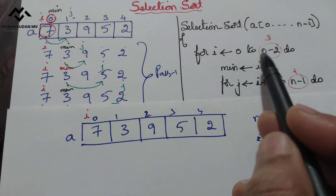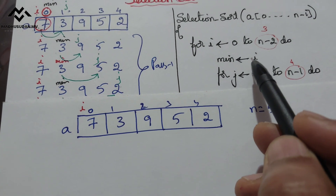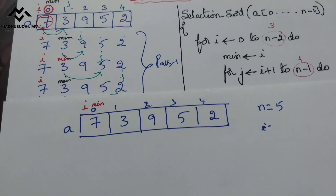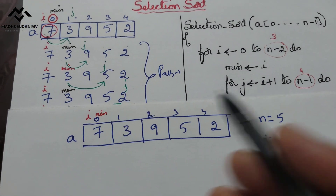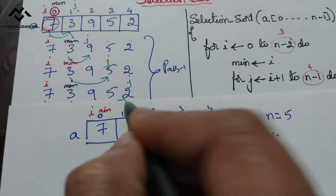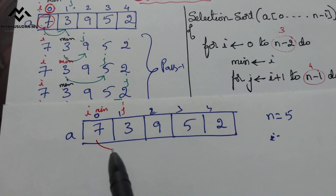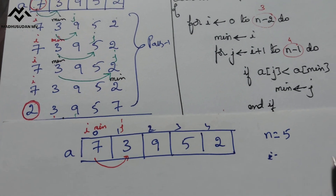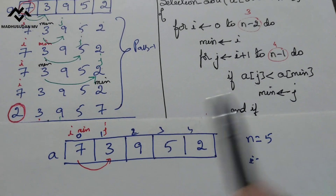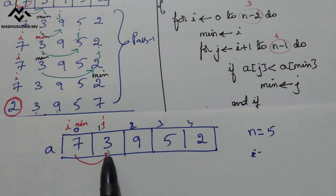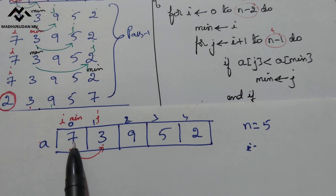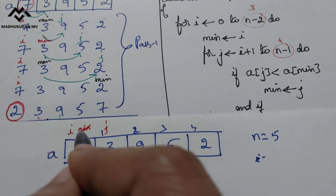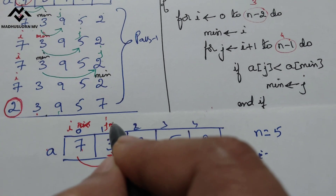Since i=0 is less than or equal to 3, we come inside. Minimum position is set to i. Then j equals i plus 1, so j is pointing to the next element. We compare: a[j]=3 is less than a[min]=7, which is true, so we come inside and assign j to min. Now this new position is my min.